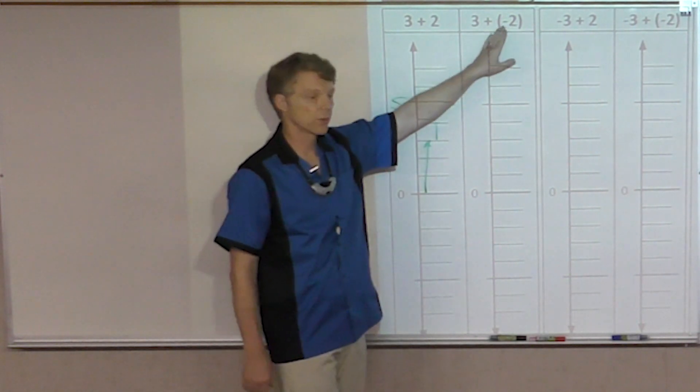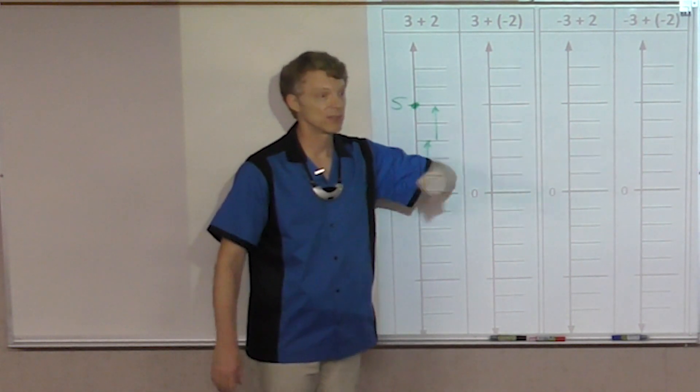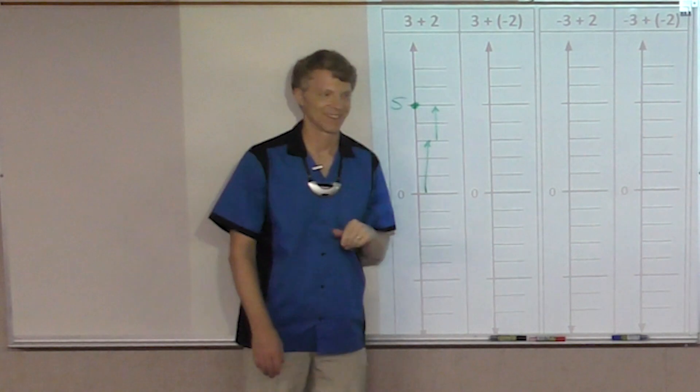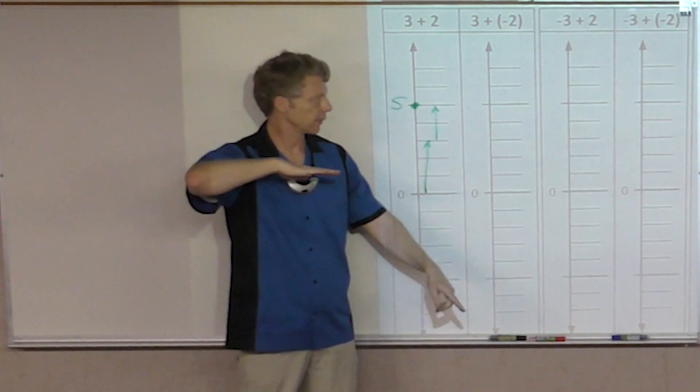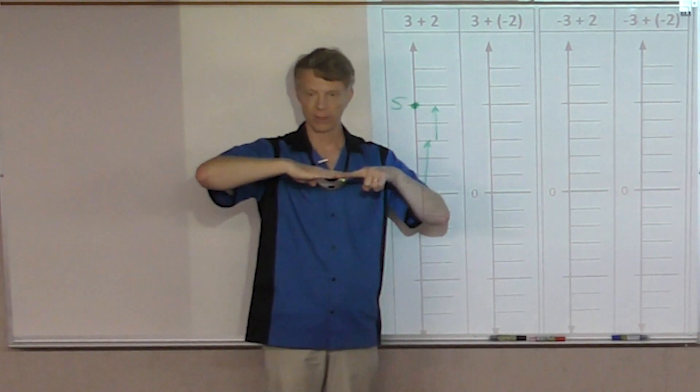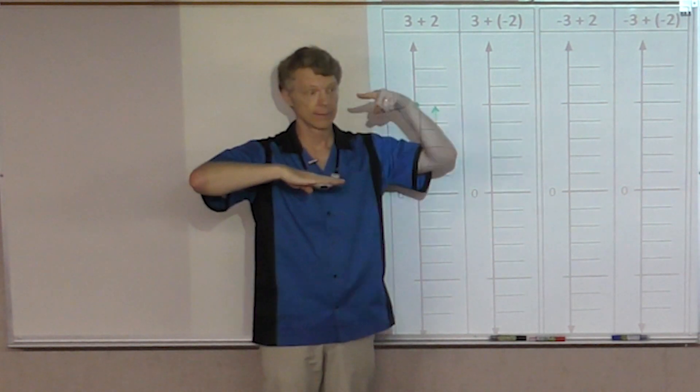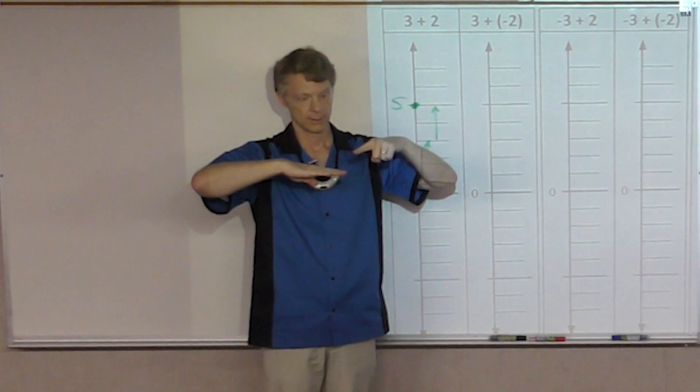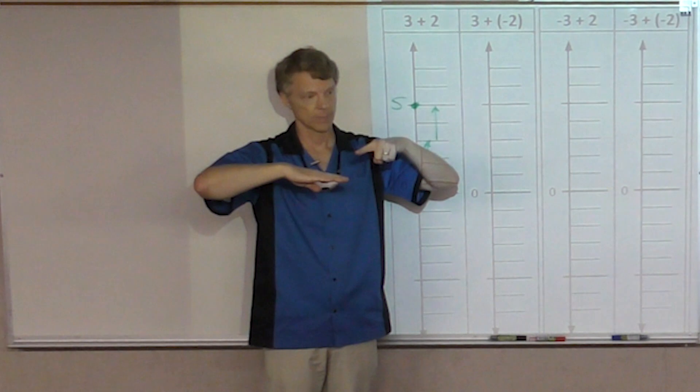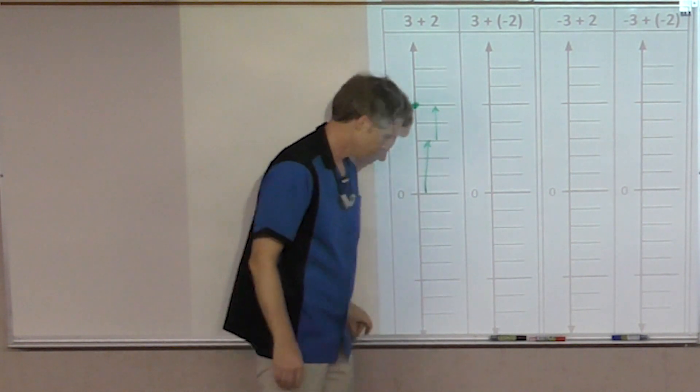We're going to move on now to three plus negative two. Alright. What number do we start at? Starting at zero. Here's our pointer. Show me three plus a negative two. Did we hit zero? No. So are we positive or negative? Positive. Okay. What's my answer? One.